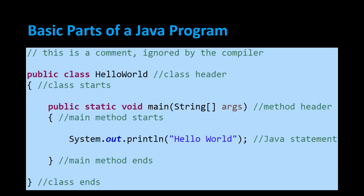The basic parts of a Java program. Looking at the screen, you can see at the very top there are two forward slashes, and this indicates a comment in a Java program — it's ignored by the compiler. You can have comments on their own line or at the end of a Java statement, like where it says class header, method header, Java statement. You can write those as notes to yourself to describe your own code, or they can be used in many other ways. I have a separate video on comments and the different types.